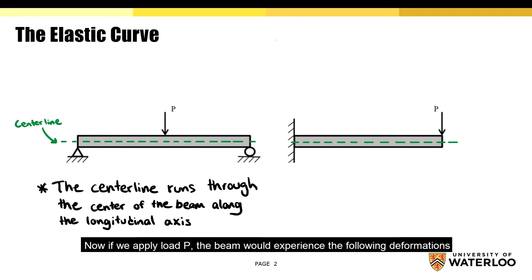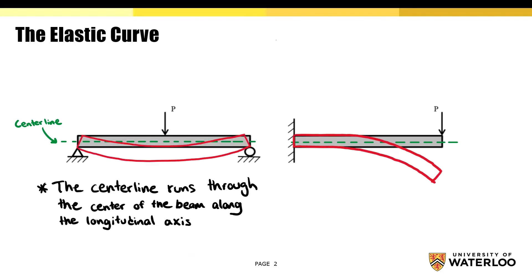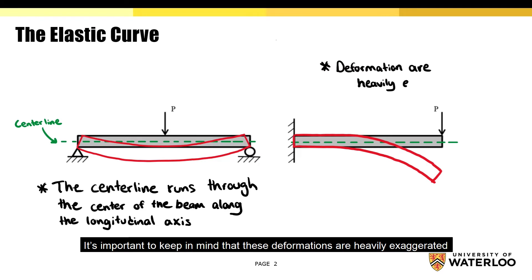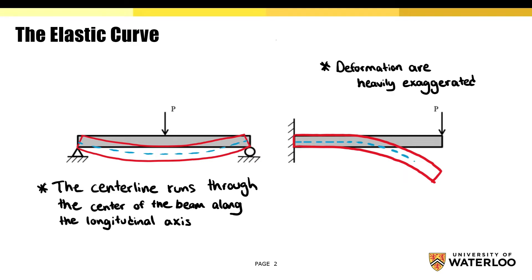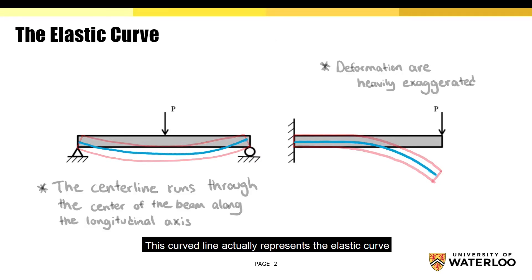Now, if you apply load P, the beam will experience the following deformation. It's important to keep in mind that these deformations are heavily exaggerated. Notice how the center line bends along with the beam. This curved line actually represents the elastic curve.